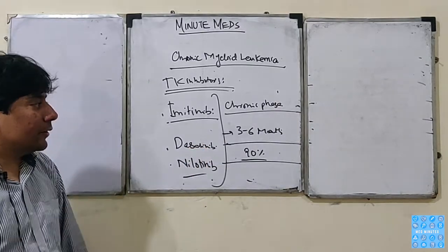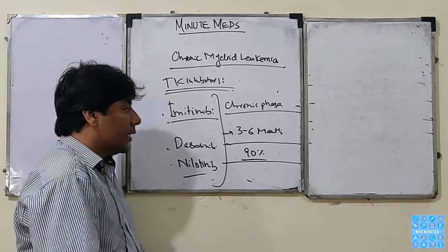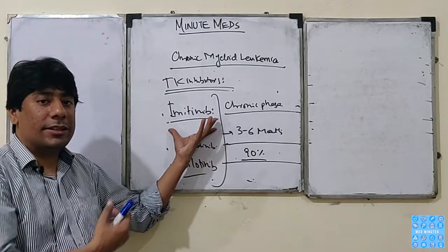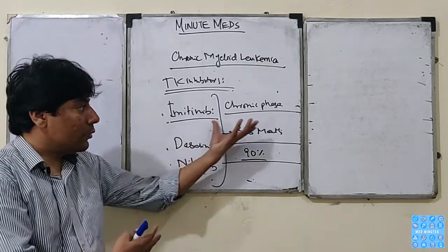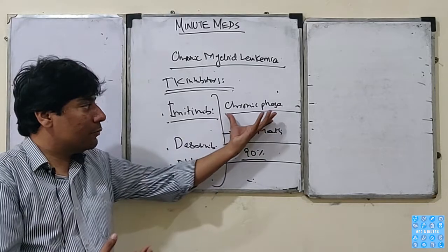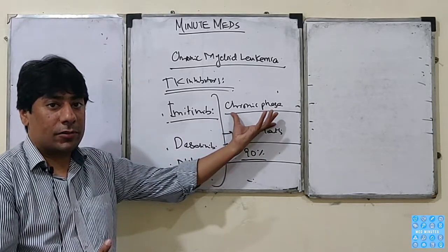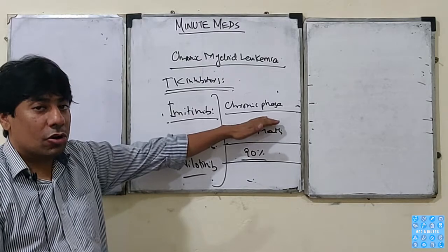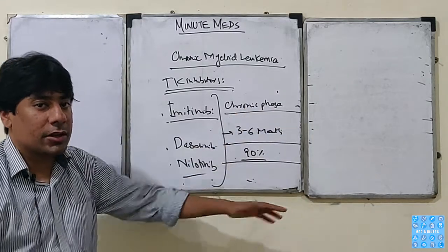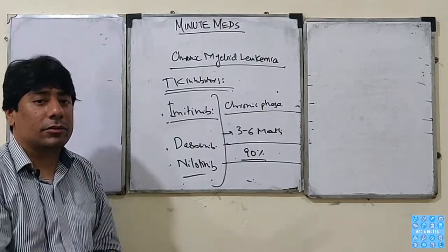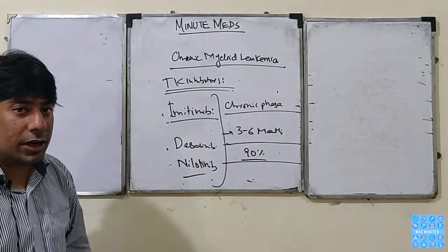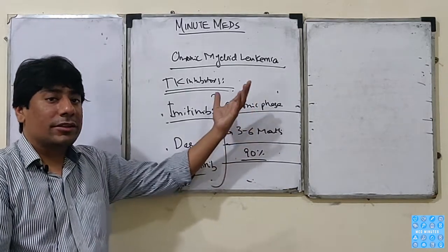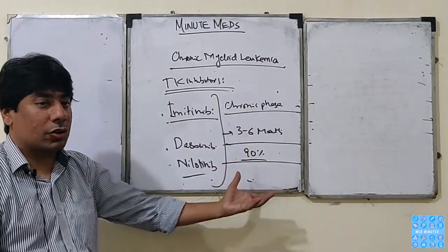With the development of these drugs we are able to prolong the chronic phase. If the chronic phase is not okay and the patient moves on to blast crisis, it is going to lead to morbidity and possibly mortality. So prolonging the chronic phase reduces mortality and morbidity.